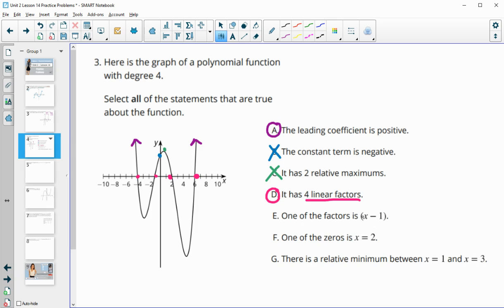One of the factors is x minus 1. Remember, if x minus 1 is a factor, then x equals 1 is a zero. Well, this one is at negative 1, this one is at 2, so this is false.